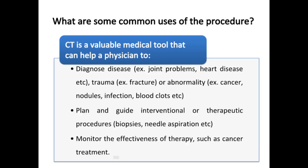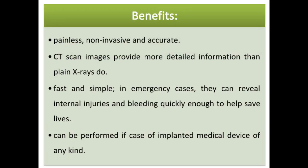A doctor may recommend a CT scan to help diagnose muscle and bone disorders such as bone tumors and fractures, and to detect bone and joint problems. CT scans can detect and monitor diseases such as cancer, heart disease, lung nodules, and liver masses. They can help locate a tumor, blood clot, excess fluid, or infection. CT scans also guide procedures such as surgery, biopsy, and radiation therapy, and can monitor the effectiveness of treatments like chemotherapy by comparing scans over time.